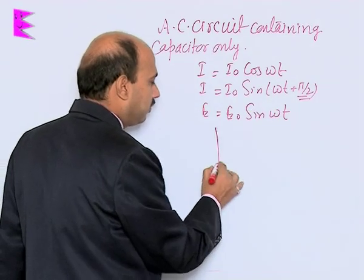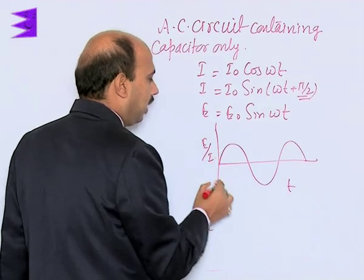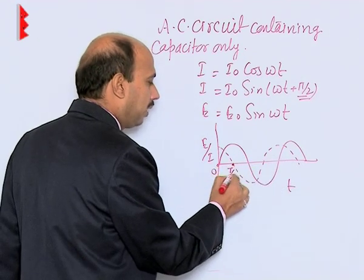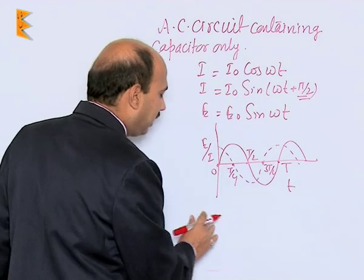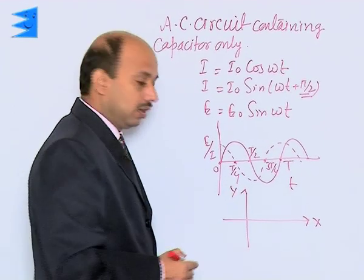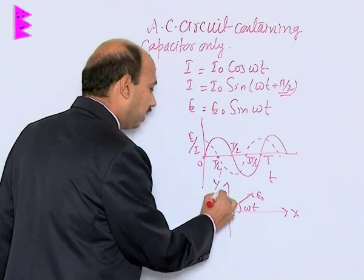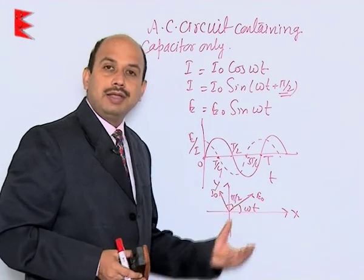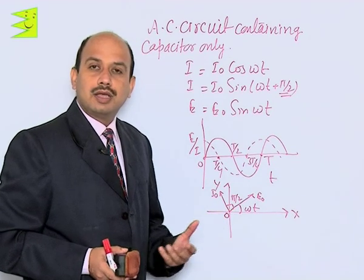You can draw the graph of E and I versus t. The EMF follows a sine curve, and the current is ahead of it. The time axis marks 0, T/4, T/2, 3T/4, and T. For the phasor diagram, taking the x-axis and y-axis, EMF E₀ is represented at angle ωt. The current phasor is drawn ahead by π/2, showing that current leads the applied EMF at every instant.